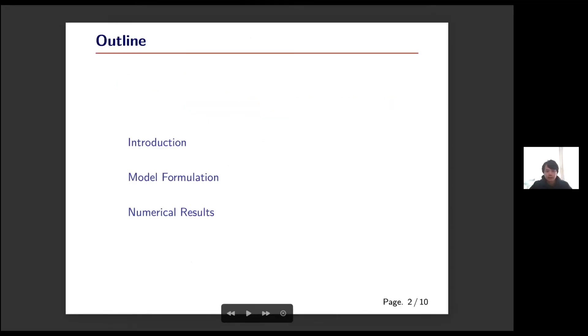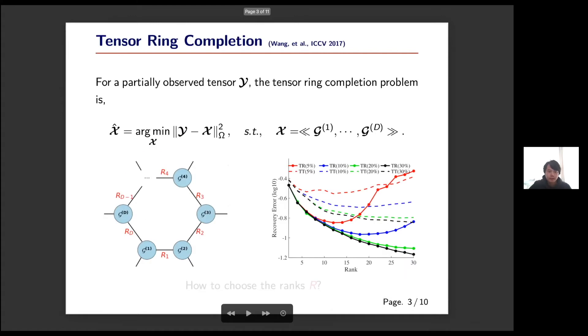My presentation will include the following three parts. The tensor completion problem was introduced by previous presenters, and here we want to find an optimal tensor ring format which minimizes a loss function. Usually the loss function is just a square loss with the observed tensors. There is a very important hyperparameter in this problem which is the tensor ring ranks.